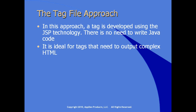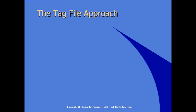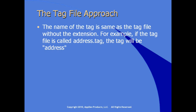It is ideal for tags that need to output complex HTML, because complex HTML is what UI developers do best. There are some rules. A tag file must have a .tag extension. It can be stored inside the WEB-INF/tags folder of the application itself, or you could package several tag files in a JAR file and add the JAR file to the lib folder of WEB-INF. The name of the tag is the same as the tag file without the file extension, which must be .tag.